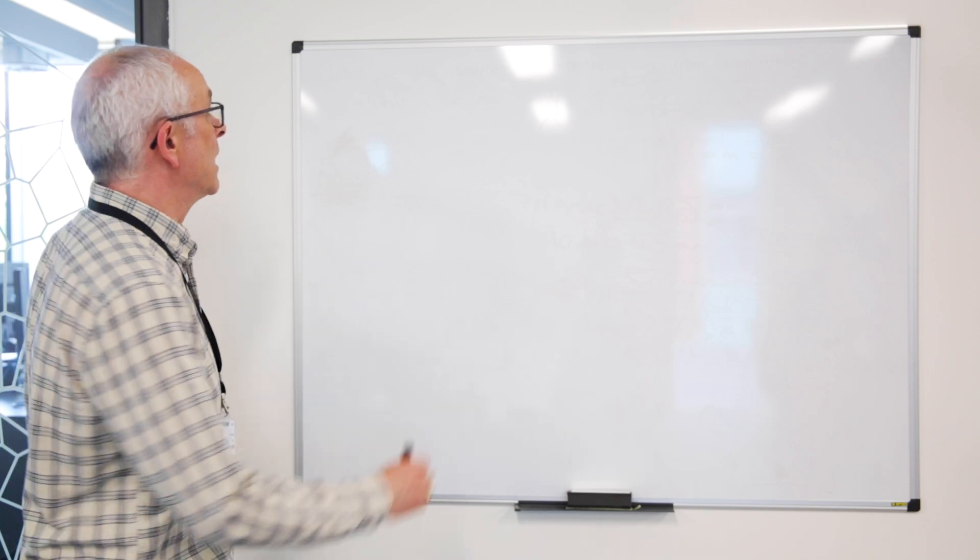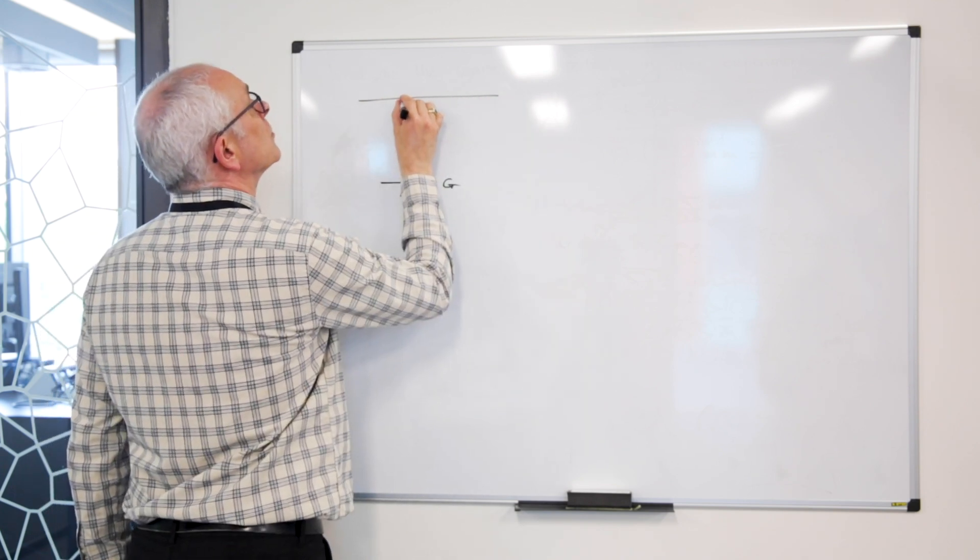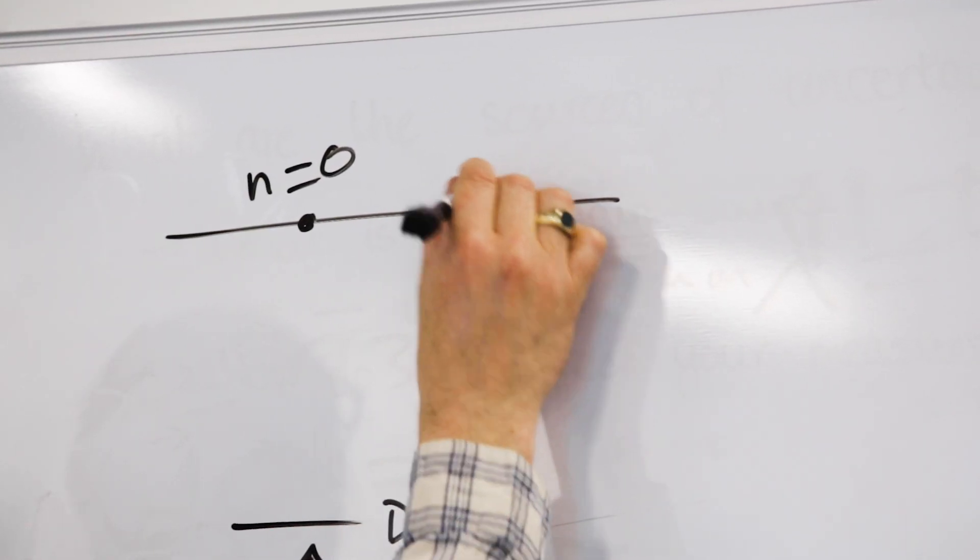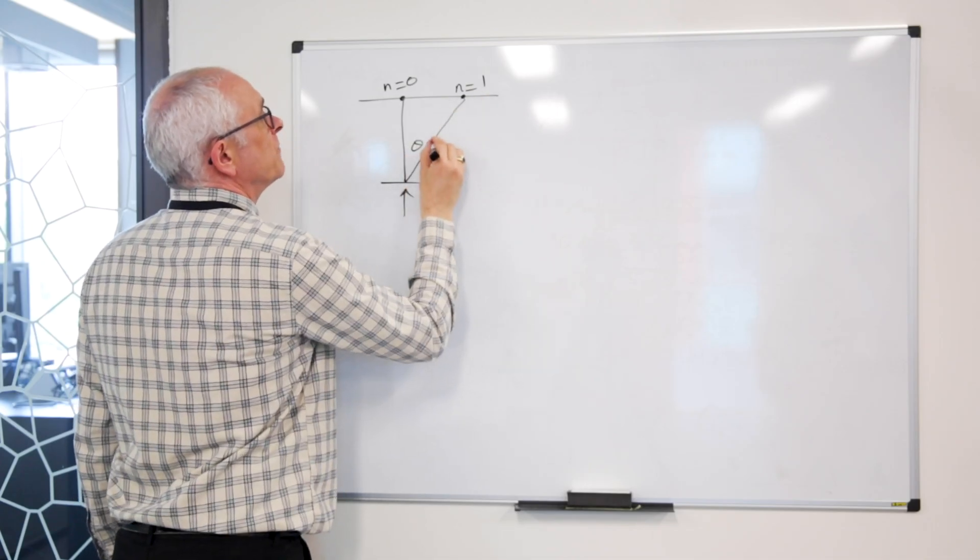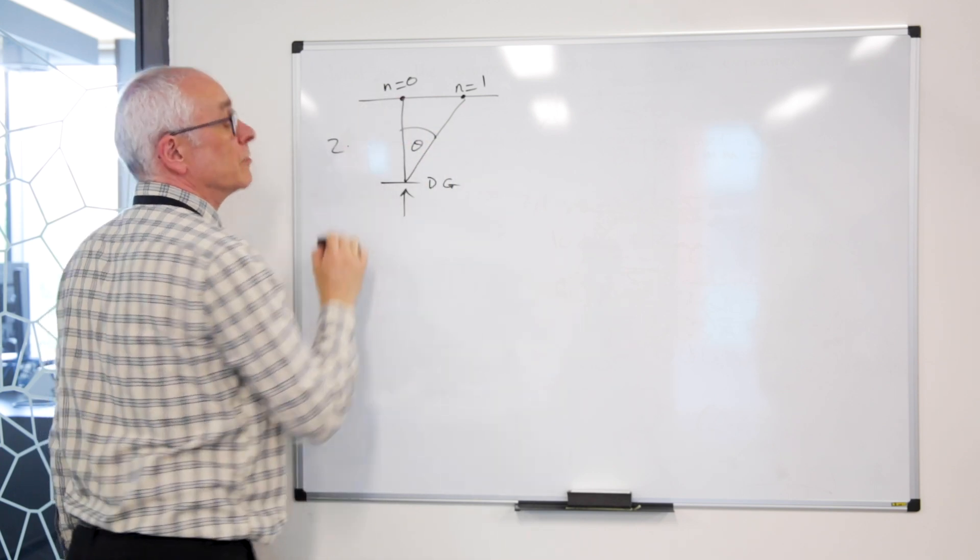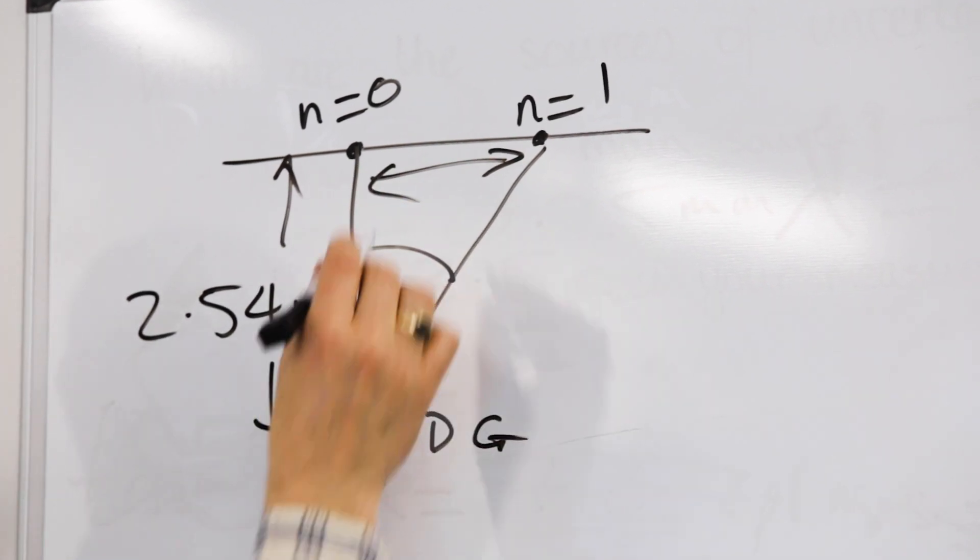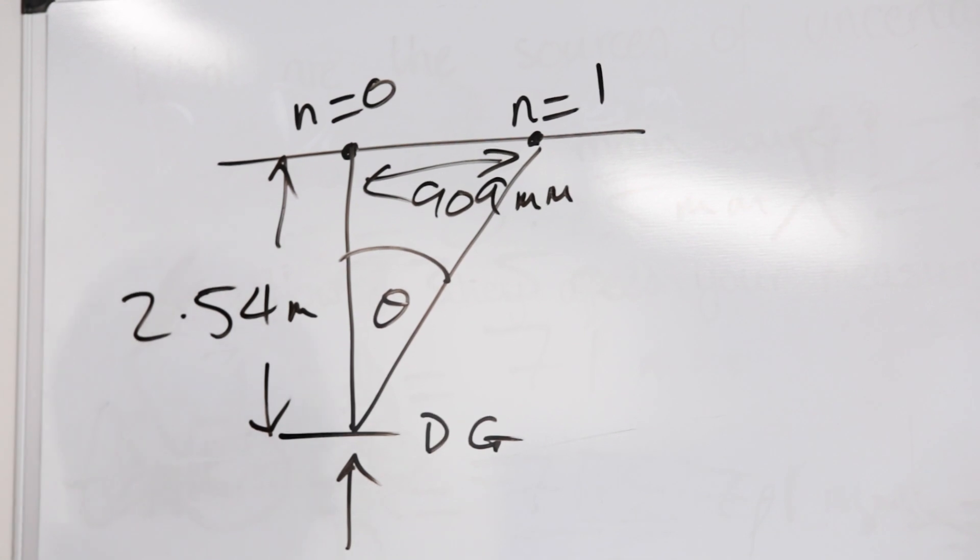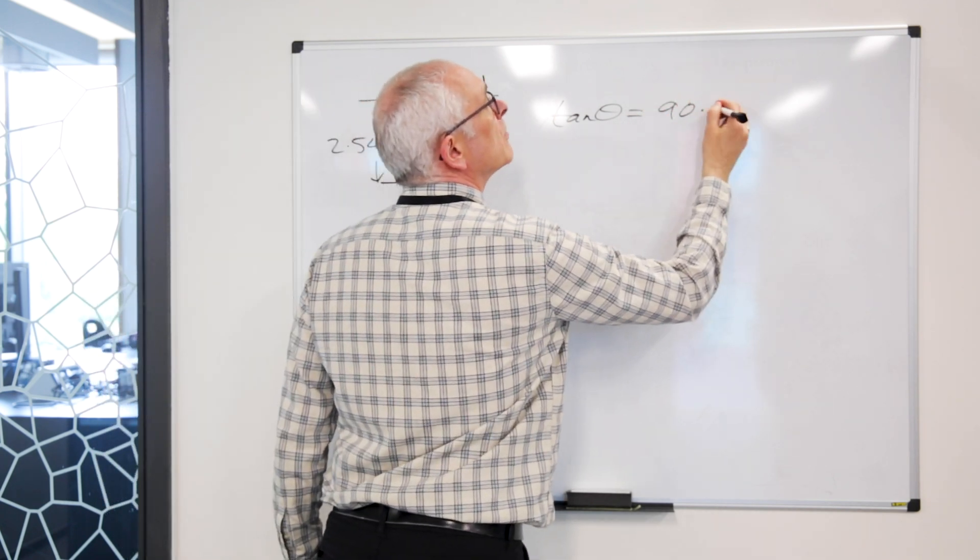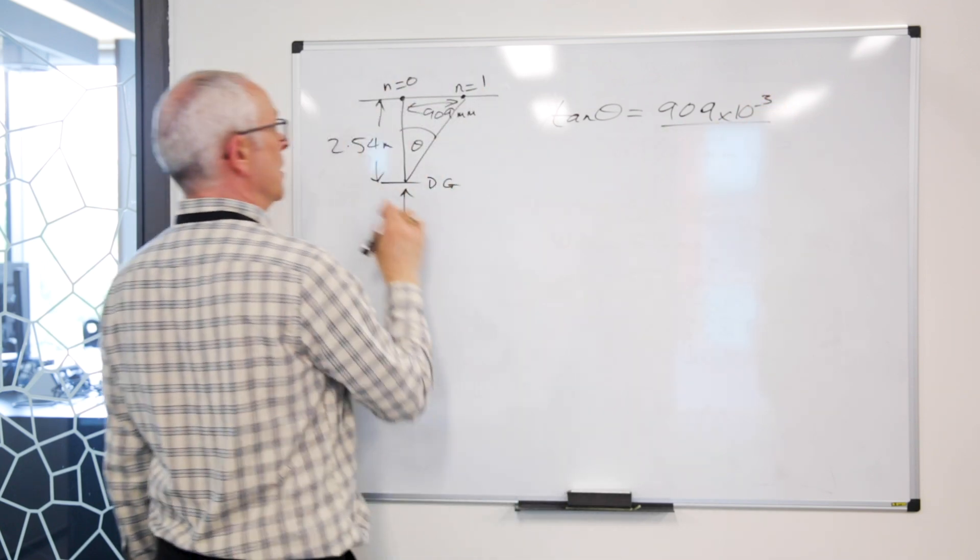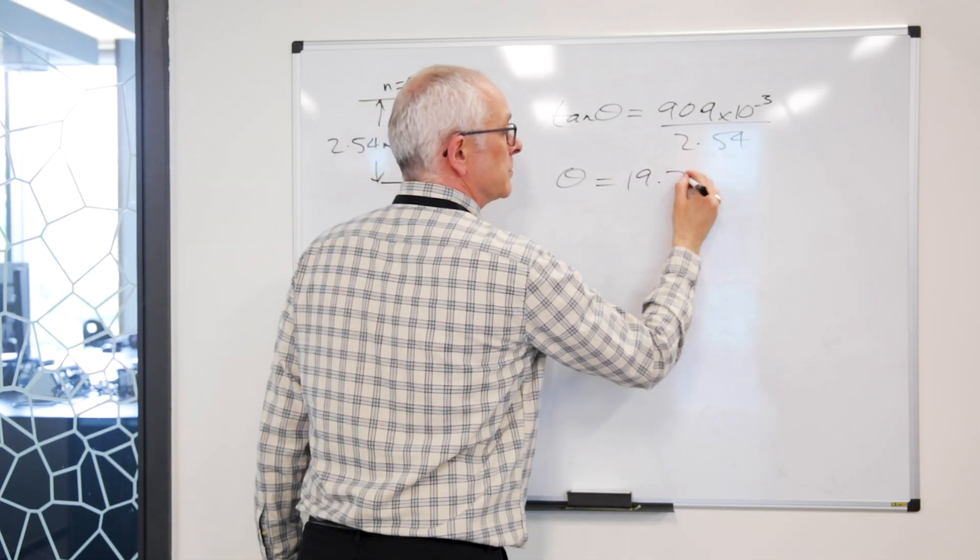What we're going to do now is make the calculations. If there's the diffraction grating and the laser light shines onto it, we measured the zeroth dot and then the first order diffraction pattern. That gives us an angle theta which we need to measure. This measurement was 2.54 meters and that was 909 millimeters. So what we have is that tan theta is 909 times 10 to the minus 3 divided by 2.54, which gives us theta equals 19.7 degrees.